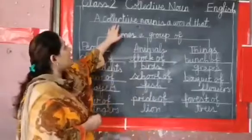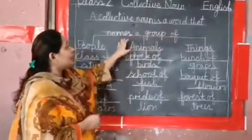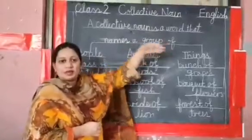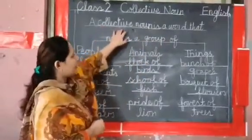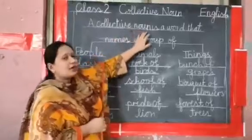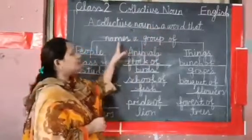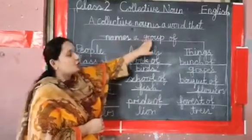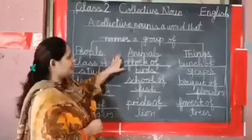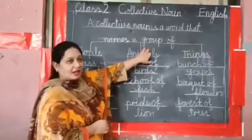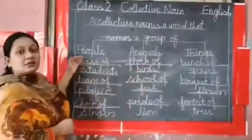Let's start. A collective noun is a word that names a group of people. Now it's your turn. Very good. A collective noun is a word that names a group of people, animals. Very good. Let's start with examples.